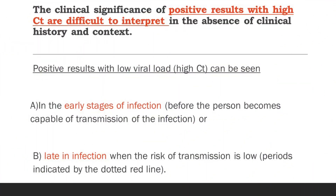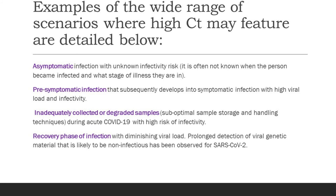The CT value is inversely proportional to the patient's infectivity. If a person has a low CT value, they have a high viral load. But if the patient has a high CT value, it does not always mean the patient has a low viral load, because the patient can either be in an early stage of infection or in a late stage of infection. A high CT value has to be interpreted very carefully because the patient could be an asymptomatic case with unknown infectivity risk, a pre-symptomatic case who will subsequently develop a symptomatic phase with high viral load, a case of an inadequately collected or degraded sample, or a patient in a recovery phase of infection. Hence the high CT value must be interpreted along with the clinical context in a precise manner.